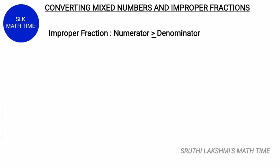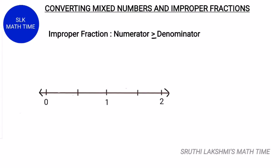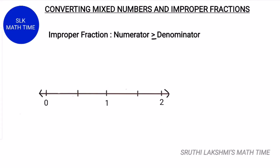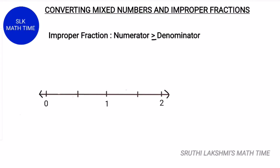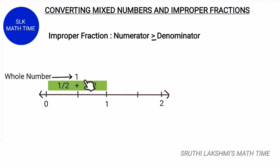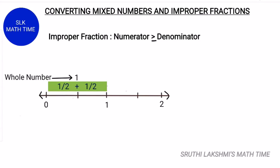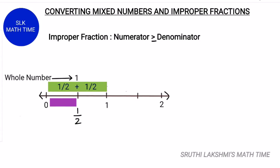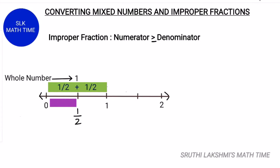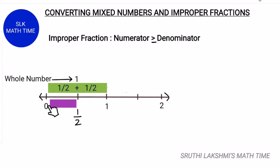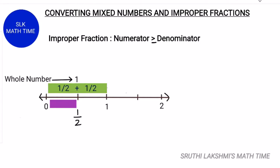First, let's understand what an improper fraction really is. Let's start with a number line that has whole numbers from 0 to 2, and let's divide the spaces between each number into two equal parts. The green rectangle represents the amount 1 because it covers the space between 0 to 1. While a rectangle this size represents the fractional amount 1 half because it only covers the amount from 0 to the first subdivision, which is 1 half.